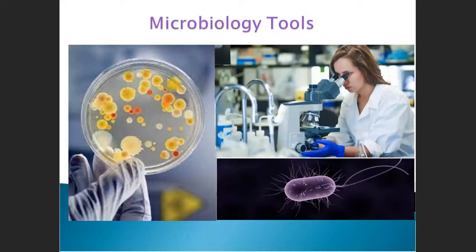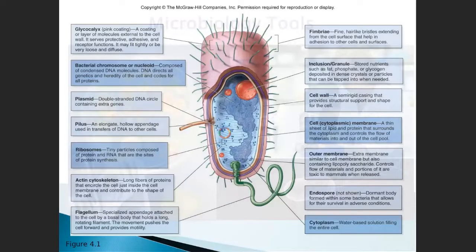Before we can talk about cells, we have to talk about the tools we use to study them. We do get to go back to the lab in two weeks, and when we do, we're going to use all these tools. We're going to start with bacteria because their shapes are easy to study, where the shapes of eukaryotic cells are more complicated. This is a bacterial cell, and these are all the parts of the bacterial cell — they're very simple in design, but even then, they have all these weapons.